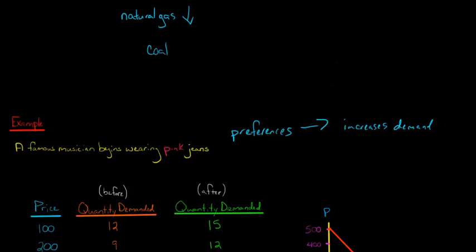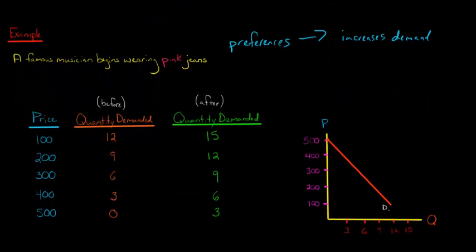So I want to show you what demand is for pink jeans before this happens, before the musician starts wearing these pink jeans. We say that here's our quantity demanded. This is our demand schedule. So at different prices, we can see what is the quantity of jeans demanded.